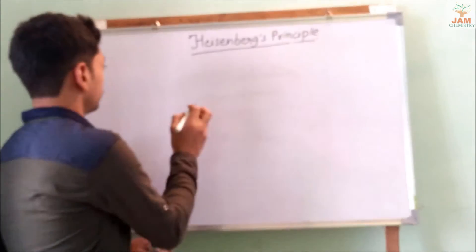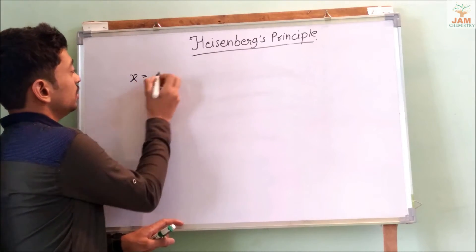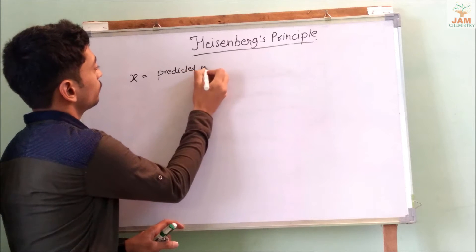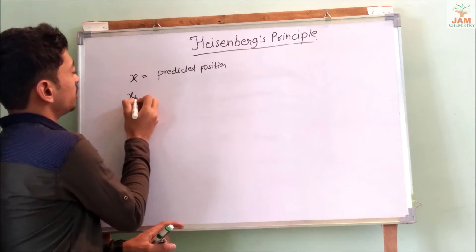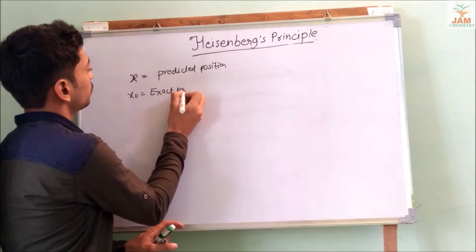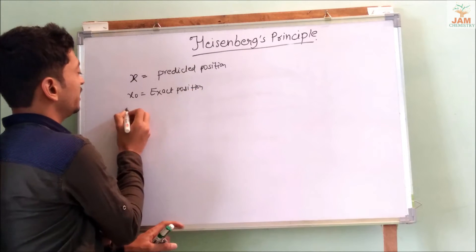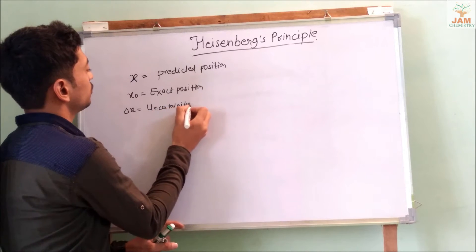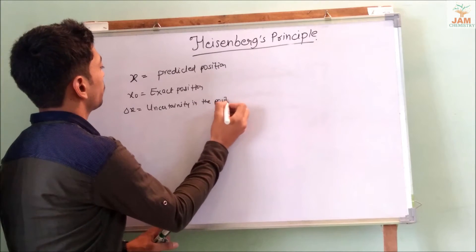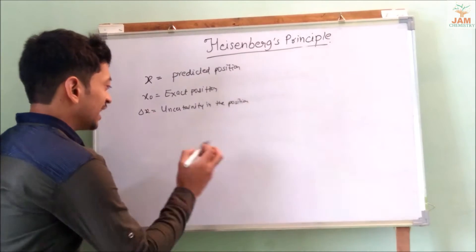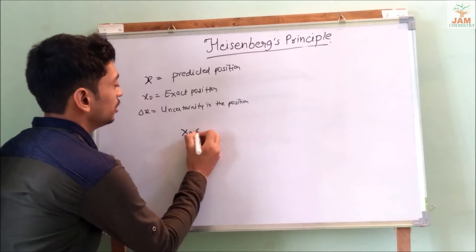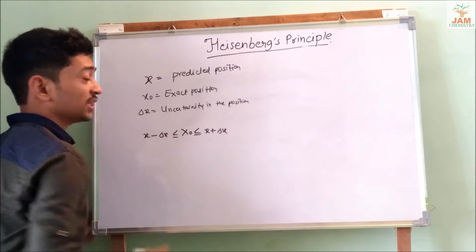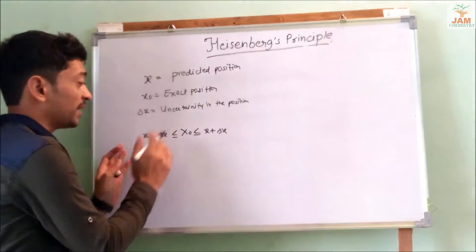Suppose x is the predicted position and x₀ is the exact position. Delta x is the uncertainty in the position. So x₀ will be less than or equal to x plus delta x, or will be greater than or equal to x minus delta x. This means the exact position of the electron lies within x plus or minus delta x.